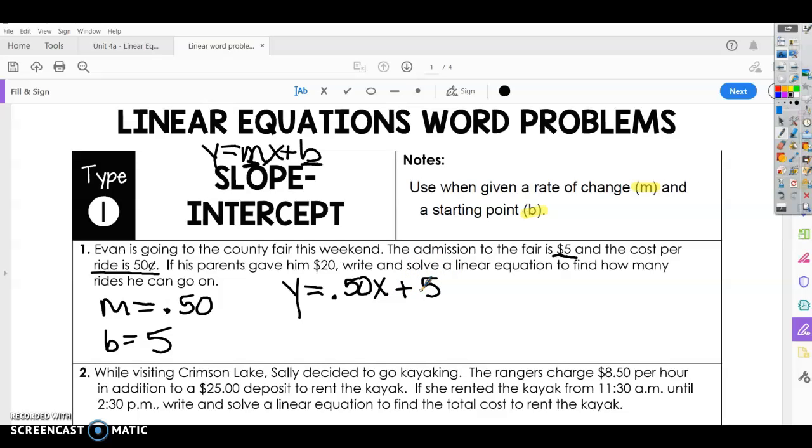We also know that his parents gave him $20, so we know he can't spend more than $20. So we can go ahead and substitute $20 in for our y. And then we can figure out how many rides we can ride. So if we subtract $5 from both sides, that gives us 15 equals 0.50x.